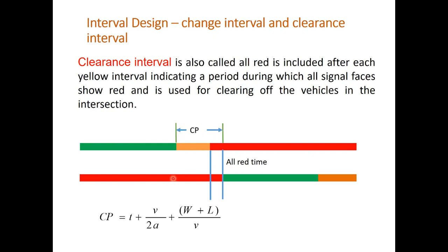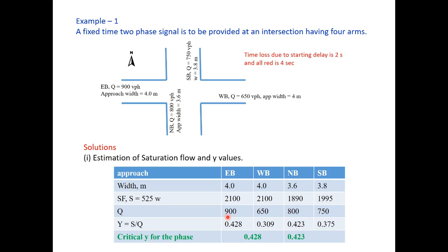The clearance interval, also called the change interval (CP), includes all-red time plus amber time. It depends upon reaction time, design speed (approach speed), acceleration rate a, width of intersection W, and length of vehicle L. This has been explained in a separate video on the dilemma zone. Now let's take one example to illustrate the procedure of signal design.